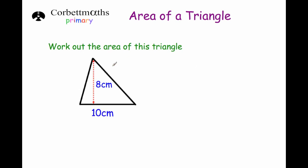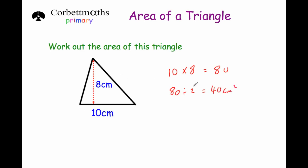This time the triangle is not right-angled, but we know the base and the height. So we're going to do 10 times eight which is equal to 80, and then we need to divide by two. 80 divided by two is equal to 40 centimetres squared. So the area of this triangle is 40 centimetres squared.